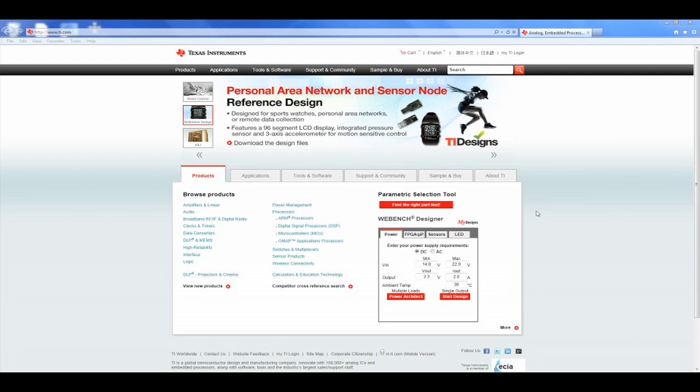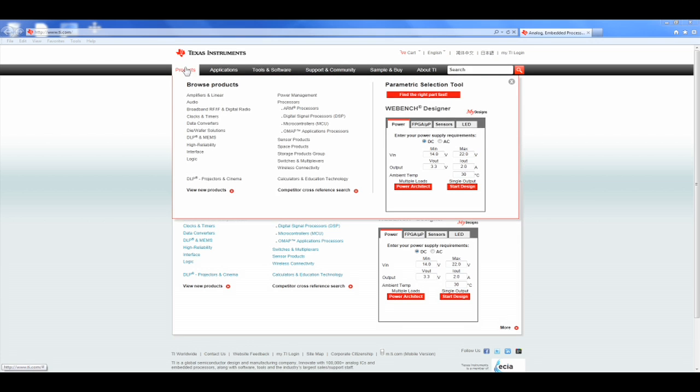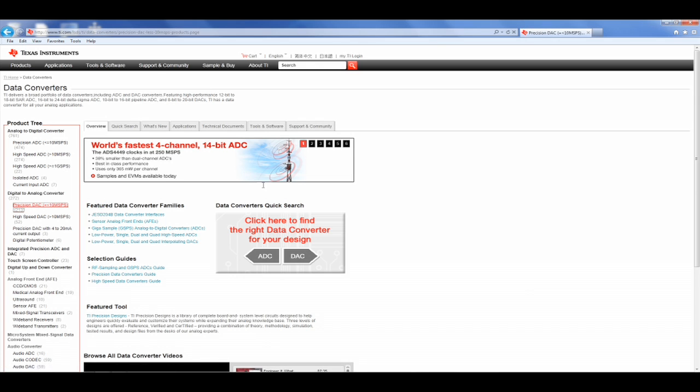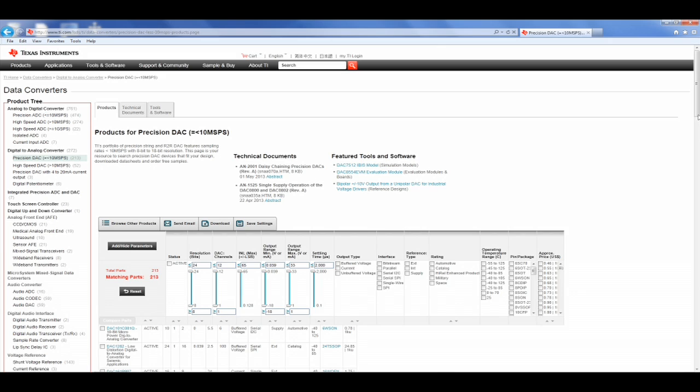So with the specifications that we just discussed in mind, we can go to the TI website under Products, Data Converters, Precision DAC, and view the TI Parametric Search Tool that can help us select a DAC.